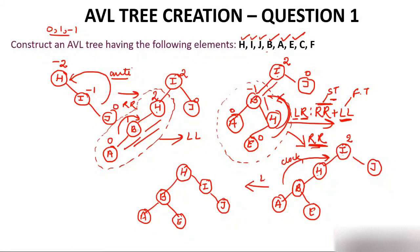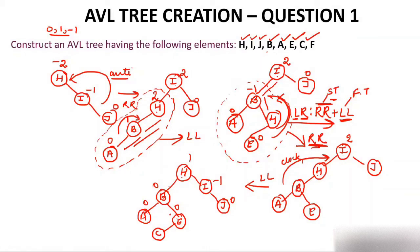We have two more elements to insert: C and F. Insert C — C is smaller than H, go left. C is greater than B, go right. C is smaller than E, so C comes to the left of E. Calculate balance factors: H has 1, B has minus 1, E has balance factor 0, and all leaves are 0. The tree is balanced after inserting C. Now insert F — F is smaller than H, greater than B, greater than E, so F comes to the right of E. Balance factors remain within {0, 1, -1}, so the tree is still balanced.